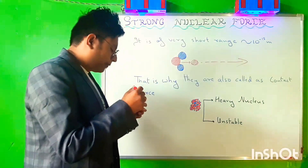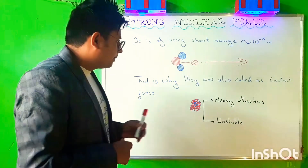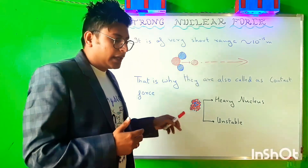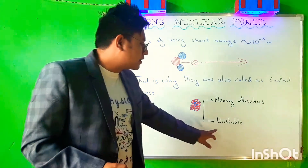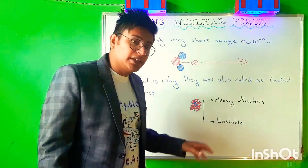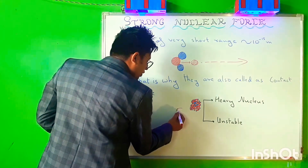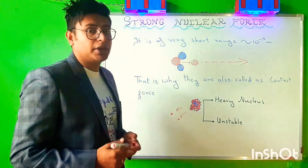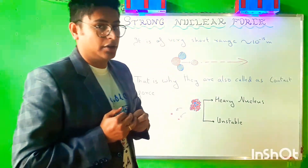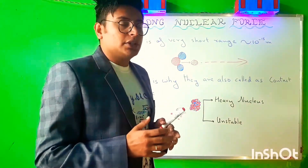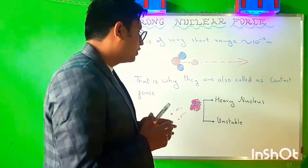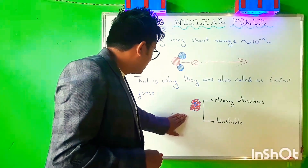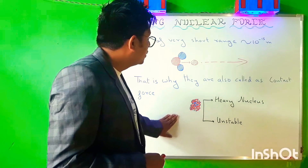This is why the strong nuclear force is also known as a contact force — when nucleons are in contact, they are very much bonded; the moment they start making some distance, they become highly repulsive. This is also one of the reasons why heavy nuclei, which have more protons and neutrons, are unstable and have the tendency of knocking out nucleons very easily, as compared to lighter nuclei which are very stable.